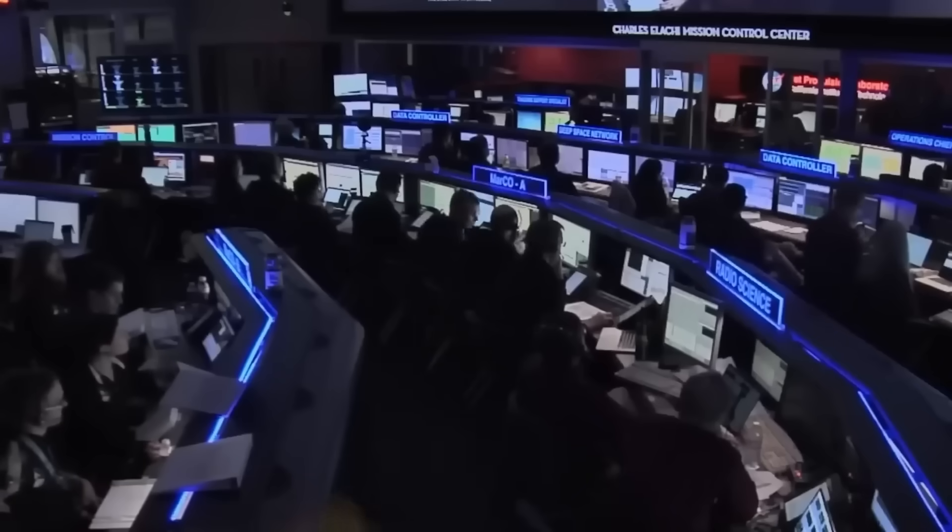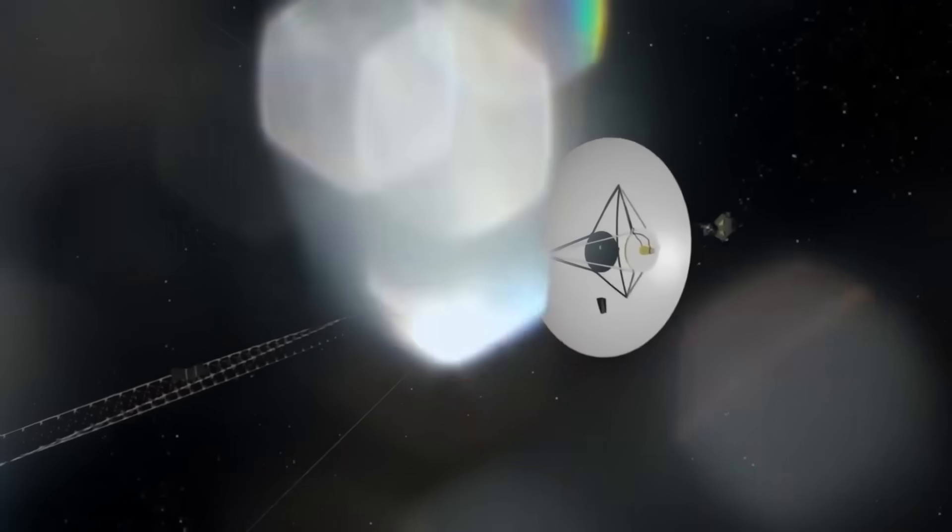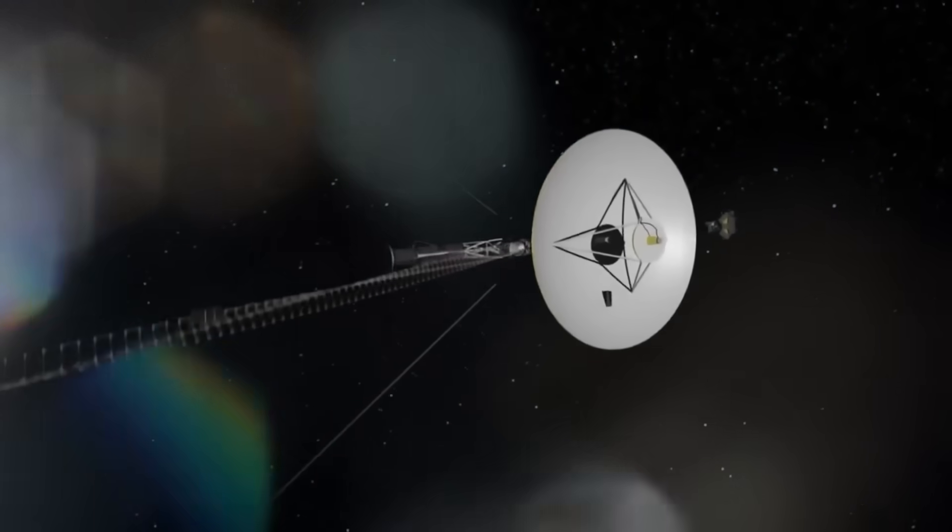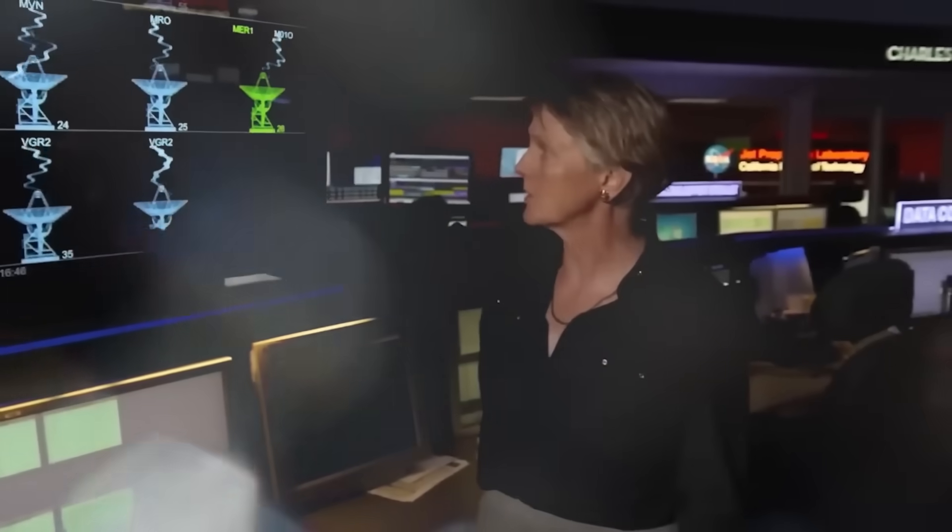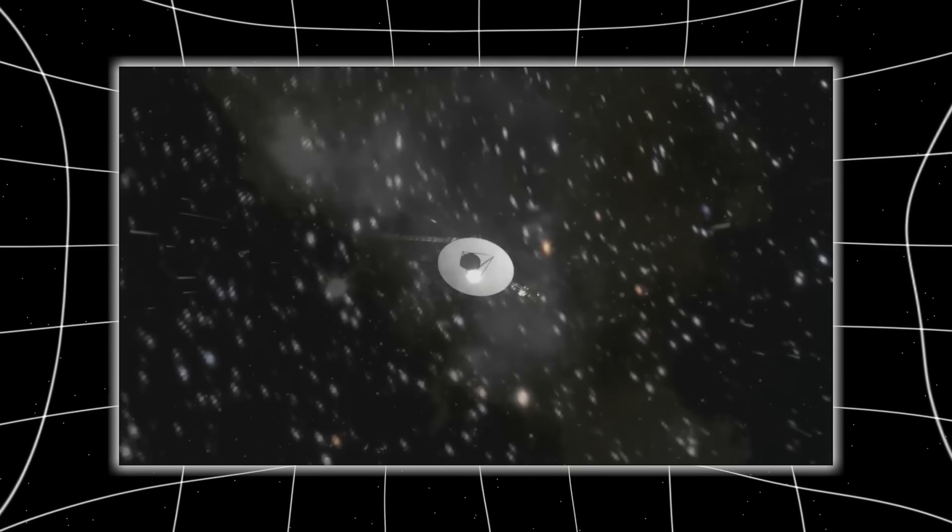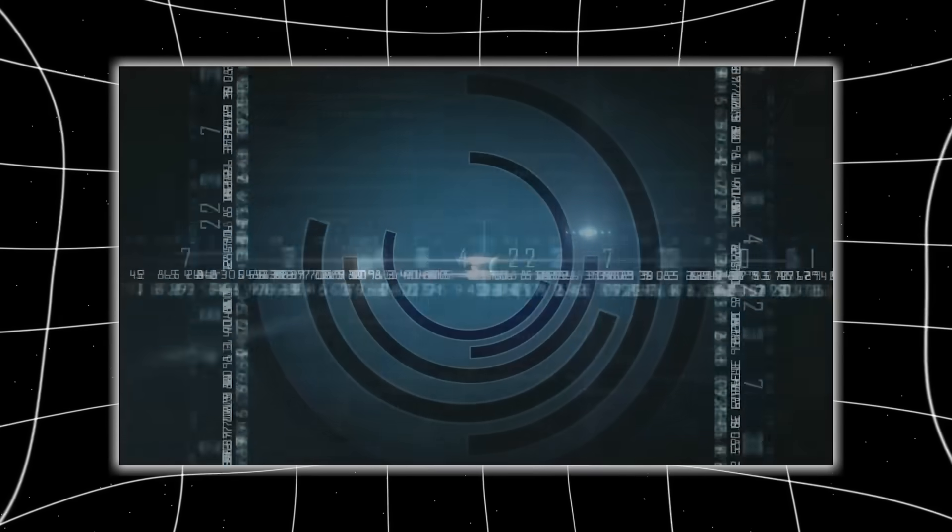Voyager 1 was never designed for what it's experiencing now. Launched in 1977, it was built for a five-year mission to photograph the gas giants. It carried less processing power than a pocket calculator, and yet it kept going, past Jupiter, past Saturn, beyond the orbit of Pluto, and finally across the heliopause in 2012, entering interstellar space.